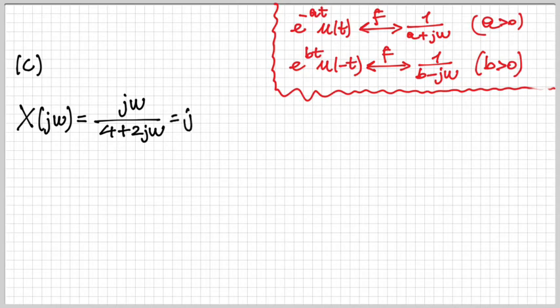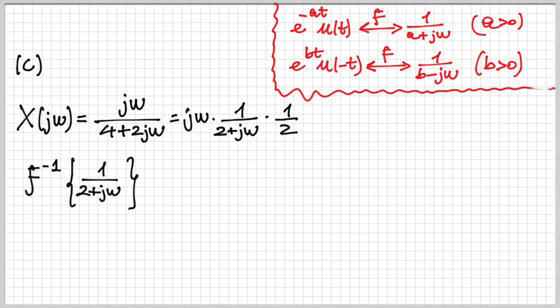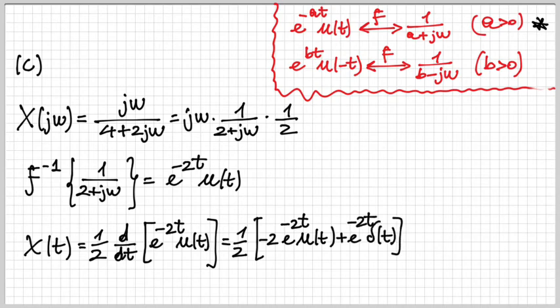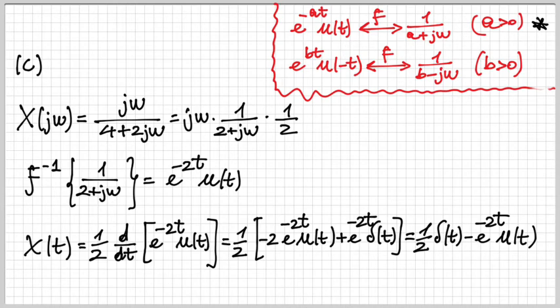Part c gives X(jω) = jω·(1/2)·1/(2 + jω). The inner term 1/(2 + jω) corresponds to a right-sided exponential e^(−2t)u(t). Because of the jω factor and the factor of one half, x(t) equals one half times the derivative of e^(−2t)u(t). Applying the derivative and the delta property, the final result is (1/2)δ(t) − e^(−2t)u(t).